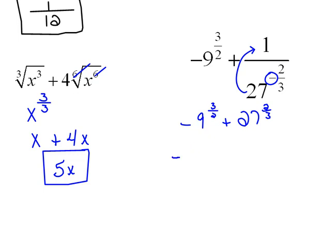And then if we rewrite these using radical notation, this would be negative. This fraction is only affecting the 9. This would be the square root of 9 cubed. So, the square root of 9 cubed. Plus, this would be the cube root of 27 squared.